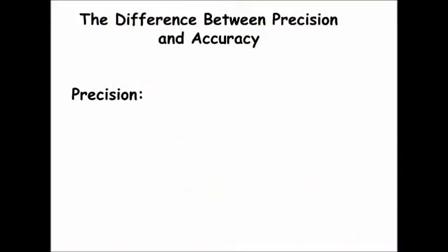Now we're going to talk about the difference between precision and accuracy. Most of the numbers that you use in science are going to be measurements, and each of those measurements has a certain precision and a certain accuracy. It's very important that you understand the difference between the two.